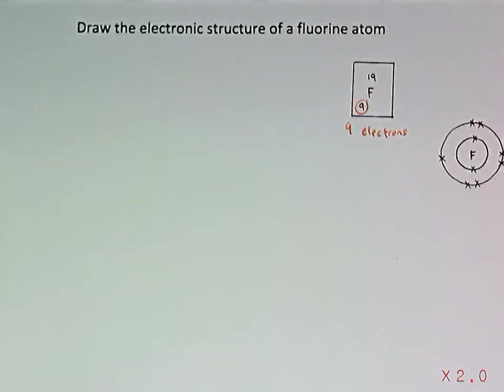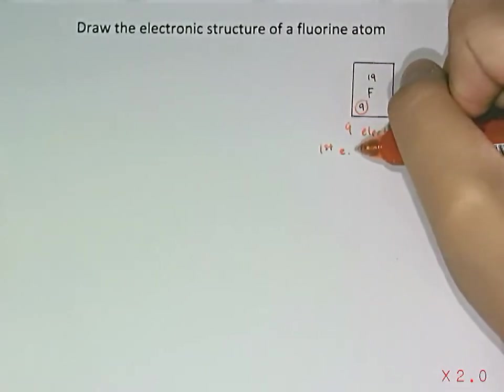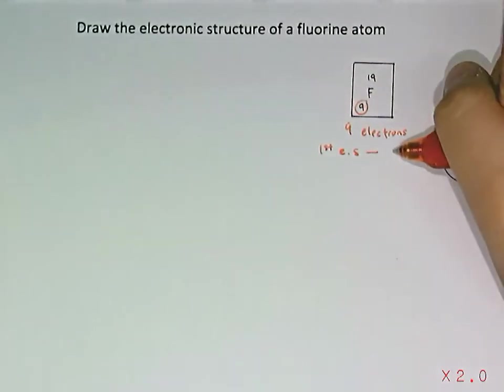Let's look at the maximum number of electrons that each electronic shell is able to hold. The first electron shell will always be able to hold a maximum of 2.